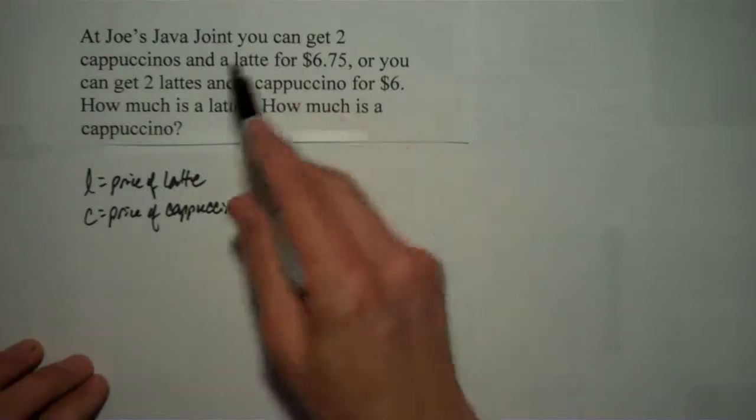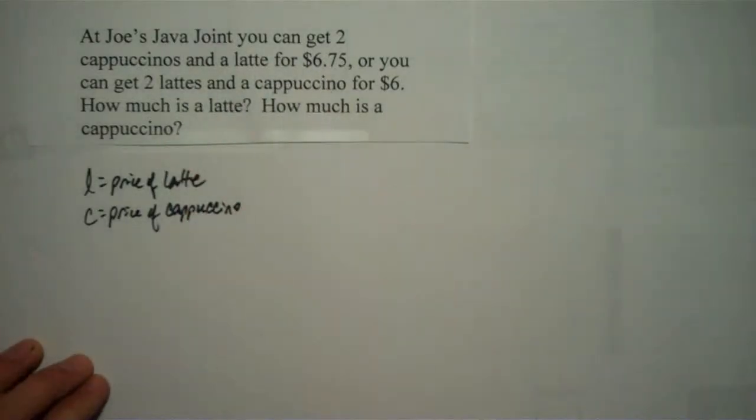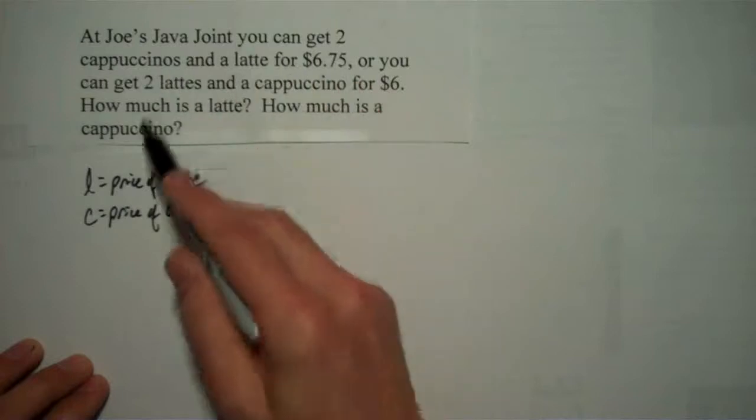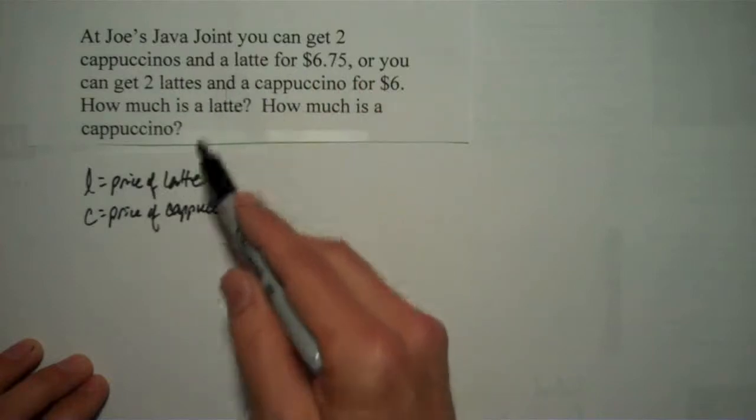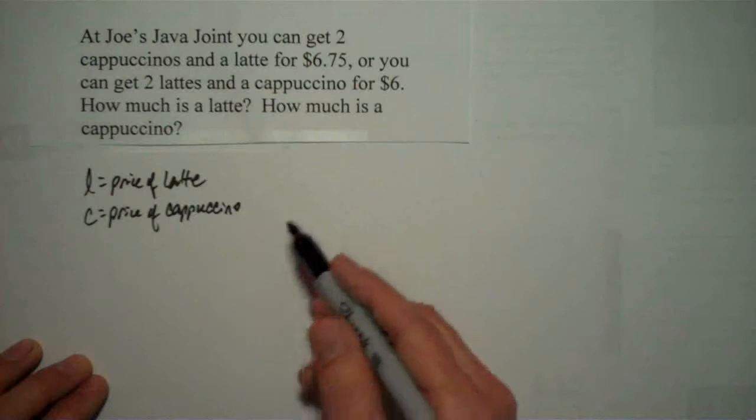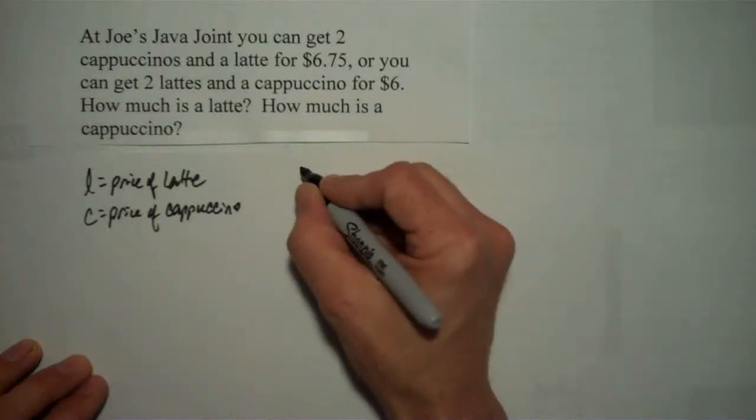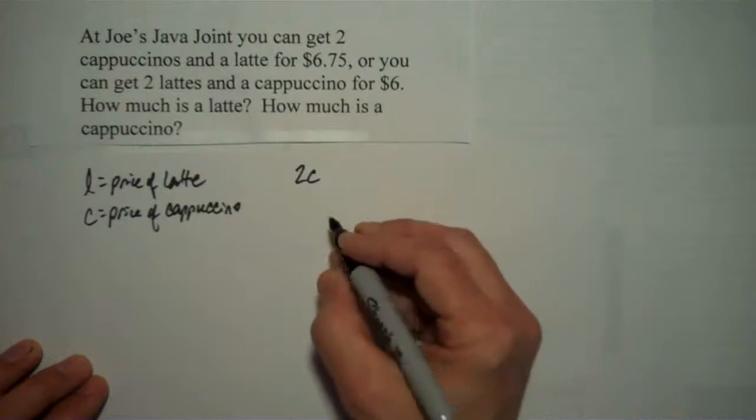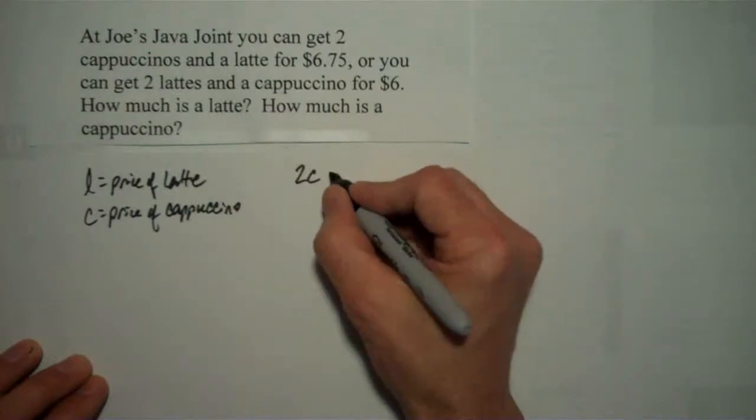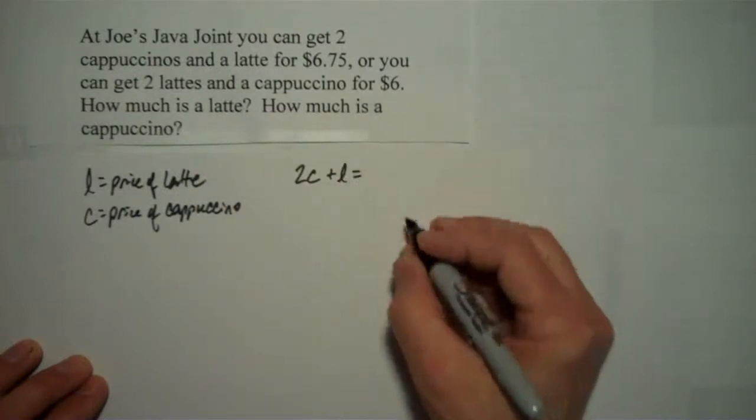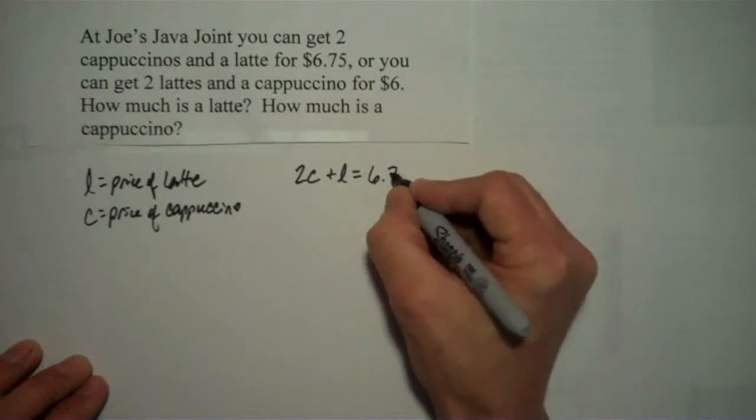And let's see, it says you can get two cappuccinos and a latte for $6.75. That means the price of two cappuccinos plus the price of a latte is $6.75. Well, the price of two cappuccinos is just going to be two times the price of one cappuccino. So that tells me 2C plus the price of a latte plus L equals $6.75.